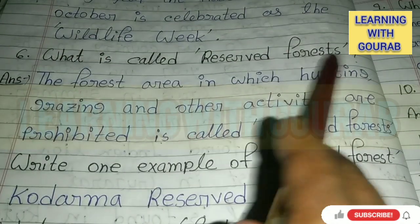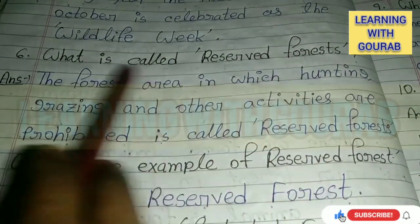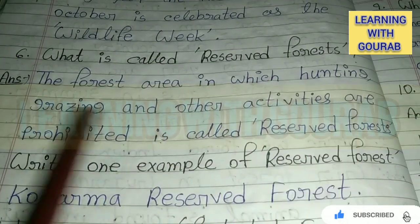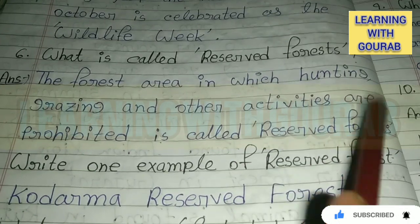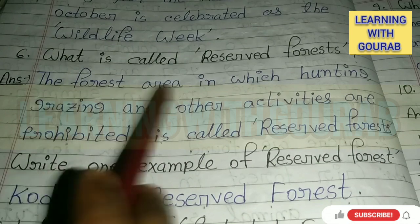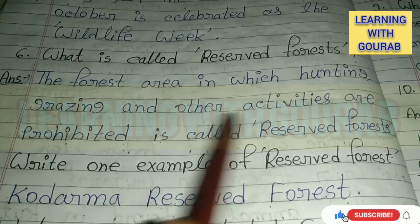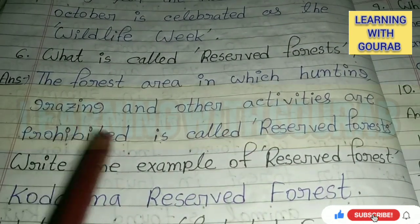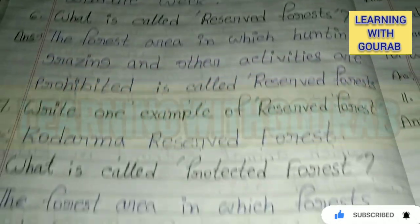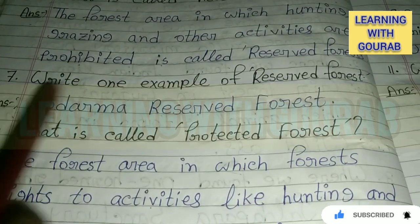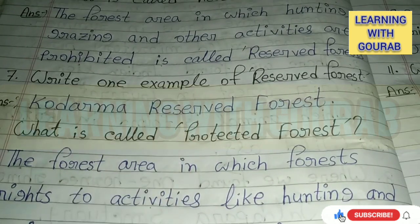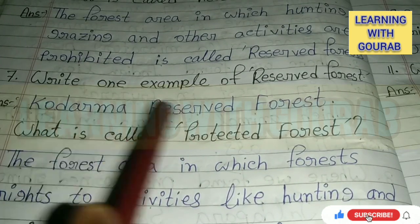What is called Reserved Forest? The forest area in which hunting, grazing and other activities are prohibited is called Reserved Forest. Write one example of Reserved Forest. Answer: Kodarma Reserved Forest.